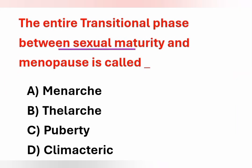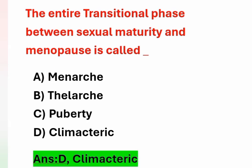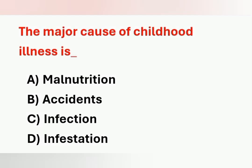Next question: the entire transitional phase between sexual maturity and menopause is called what? Options include menopause, puberty, and climacteric. The phase from onset of first menstruation (menarche) to the end of menstruation is called climacteric. Thelarche refers to the appearance of breast buds. Puberty is the onset of acquiring reproductive capacity in adolescent girls. The correct answer is climacteric.